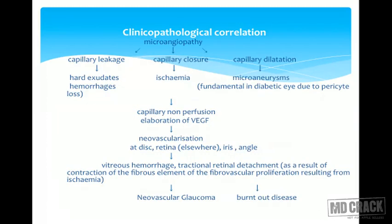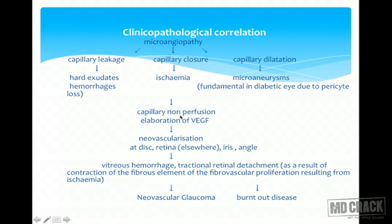The clinical-pathological correlation flowchart is very important and will help in understanding all vascular diseases of the retina. All changes in diabetes or any vascular abnormality start with microangiopathy. This can lead to capillary leakage, capillary closure, or capillary dilatation. Capillary dilatation due to localized endothelial problems leads to microaneurysms. Capillary closure due to occlusion of the capillary lumen leads to ischemia, capillary non-perfusion, and elaboration of vascular endothelial growth factors, which can later lead to neovascularization.